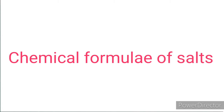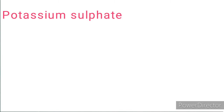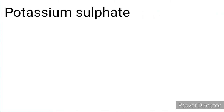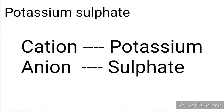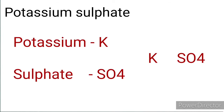Now let me explain how to write the chemical formula of these molecules using the criss-cross method by using valency. Take the first salt, potassium sulphate. First, write the symbols of each atom side by side, usually the cation first and anion next. In potassium sulphate, the cation is potassium and the anion is sulphate. The symbol for potassium is K, and the symbol for sulphate is SO₄.